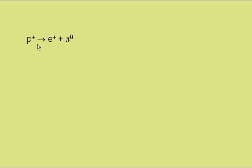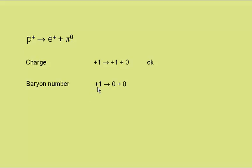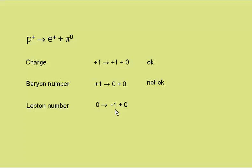In this case, a proton becomes an anti-electron, or a positron, plus a pi-nought. Charge: the proton has a charge of plus one, the positron a charge of plus one, and the pi-nought is neutral — so this is OK. Baryon number: the proton has a baryon number of one, the positron and the pi-nought both have zero baryon number — so this violates the conservation of baryon number. Lepton number: the proton has zero lepton number, the positron is an anti-lepton and so has a lepton number of minus one, and the pi-nought has zero lepton number — this also violates the conservation of lepton number. The interaction is not seen.